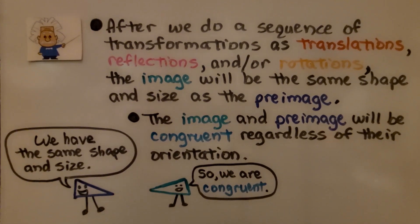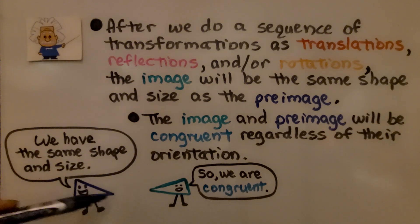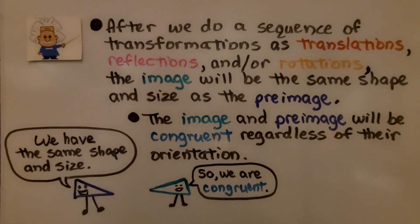After we do a sequence of transformations — translations, reflections, and/or rotations — the image will be the same shape and size as the preimage. The image and preimage will be congruent regardless of their orientation. This triangle has its smallest vertex angle on this side, and the image has it on the other side. They have the same size and shape, so they are congruent — it doesn't matter which way they're facing. Their sides have the same lengths and their angles have the same measures.